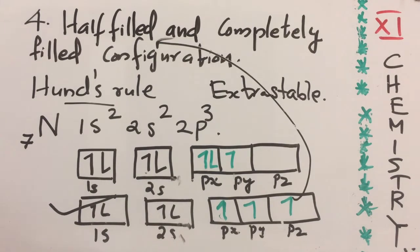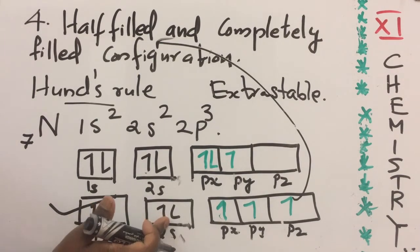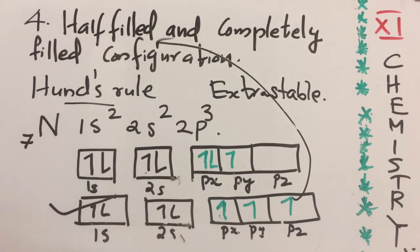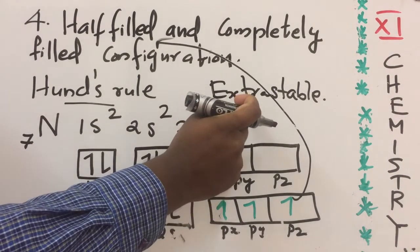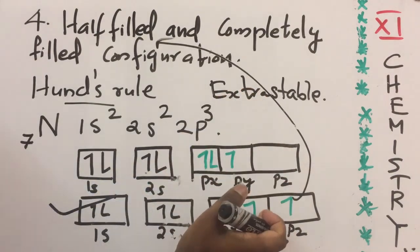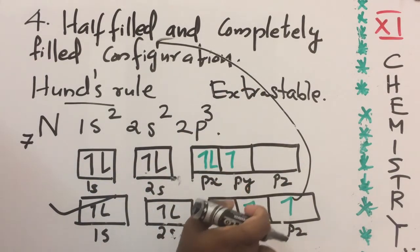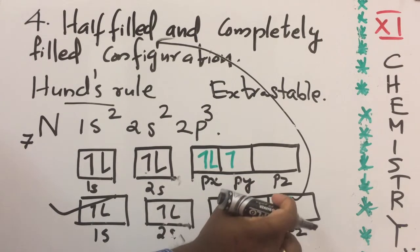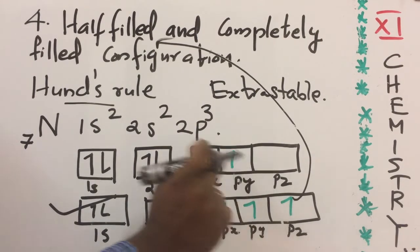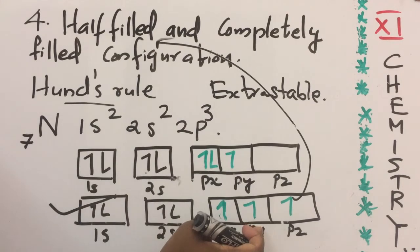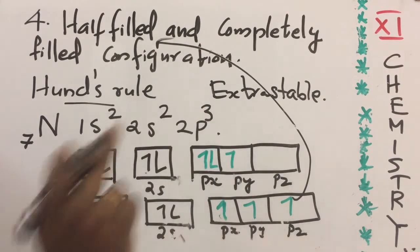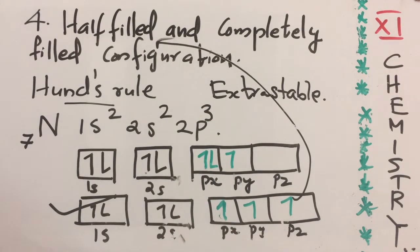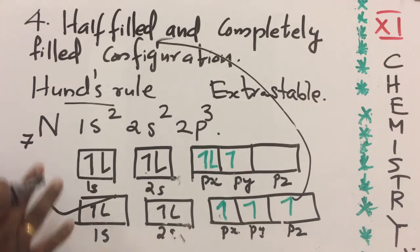How is this connected to ionization energy? Since nitrogen's half-filled configuration is highly stable, we cannot remove electrons easily from it. Removal of electrons from nitrogen is difficult due to this stable configuration, so the ionization energy of nitrogen is high.